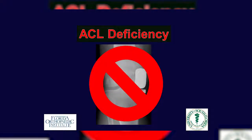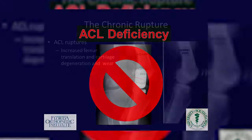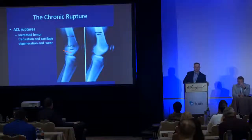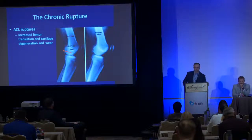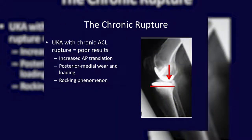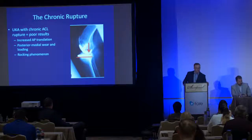ACL deficiency is an important point — for all intents and purposes, an ACL-deficient knee is a contraindication to a partial knee. With ACL deficiency or insufficiency, you get posterior translation of the femoral condyle onto the tibia. In a native knee this causes a posterior wear pattern different from the anterior medial pattern discussed earlier. After partial knee arthroplasty, this results in posterior translation of the femoral component and loading of the implant in a rocking-horse phenomenon, potentially causing early loosening. These are not good candidates.